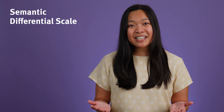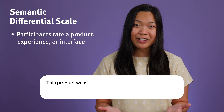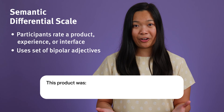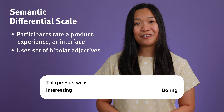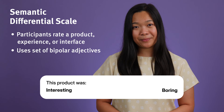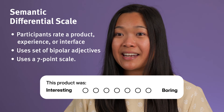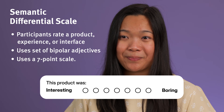In this video, we'll discuss a popular response scale option: the semantic differential scale. A semantic differential scale asks participants to rate a product, experience, or interface along a set of bipolar adjectives, such as interesting vs. boring, or clear vs. unclear. It typically uses a 7-point scale, but 5-point and 9-point scales can be used depending on how much detail you're looking for.